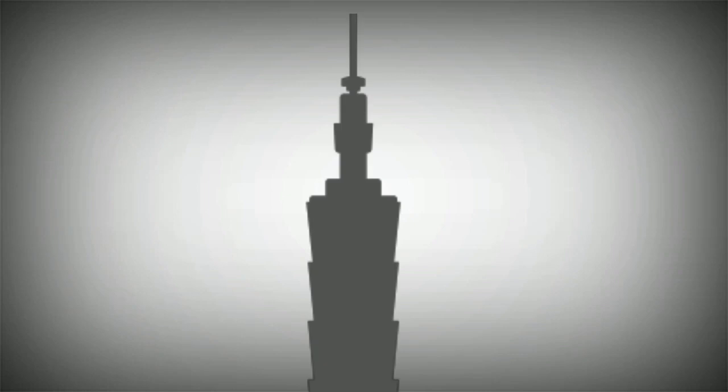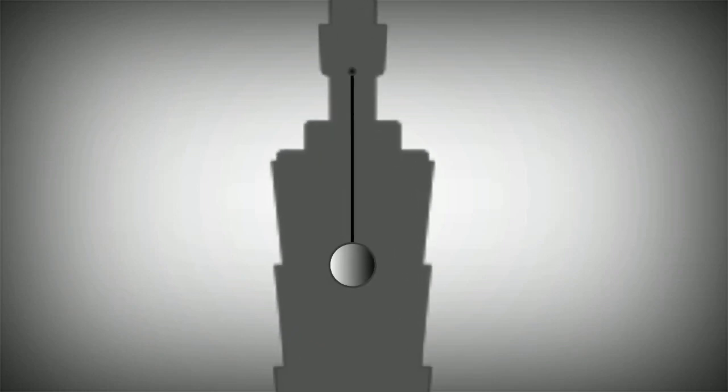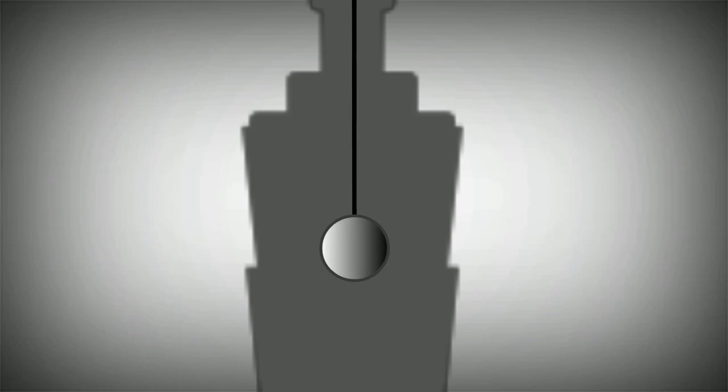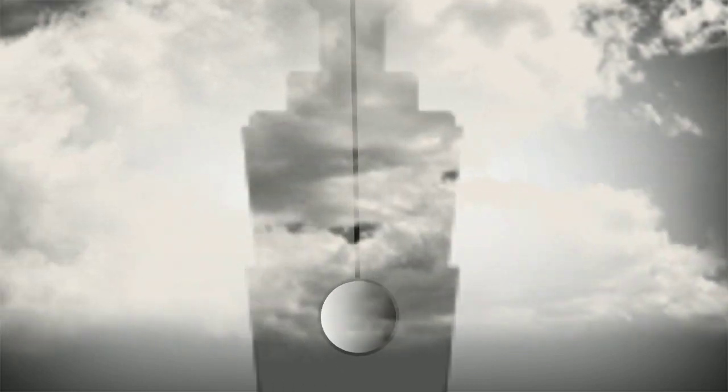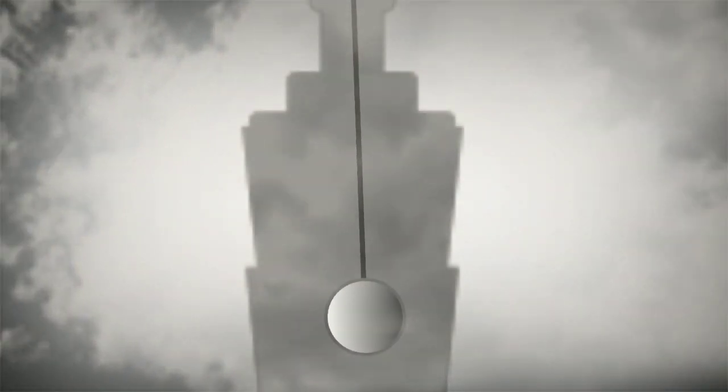This problem, however, can be solved by installing a giant pendulum inside the building and make it swing in the opposite direction to the wind when a typhoon strikes. It also helps absorb most of the vibration caused by an earthquake.